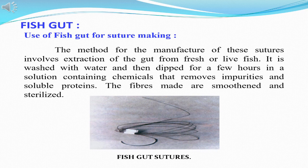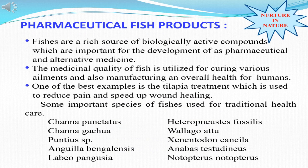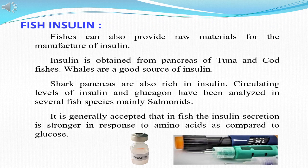The method for the manufacture of sutures involves extraction of the gut from fresh or live fish. Fishes have very important pharmaceutical by-products — these are biologically active compounds used for the development of pharmaceutical and alternative medicines. Some important species used for extraction of such products include Channa, Puntius, Anguilla, Labeo, Xenentodon and Notopterus. Fishes also provide raw materials for the manufacture of insulin, which is obtained from the pancreas of fishes like tuna and cod. Besides this, shark pancreas are also rich in insulin.